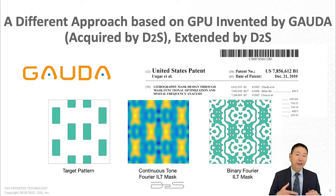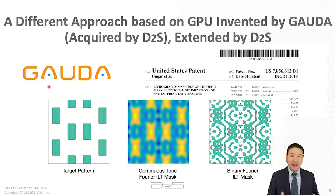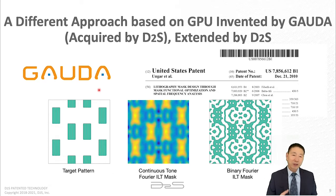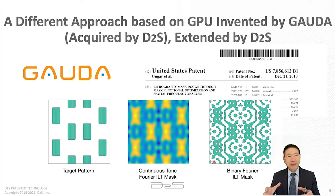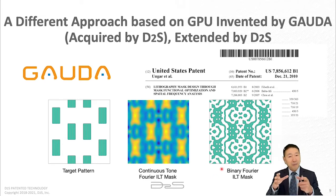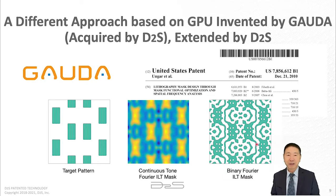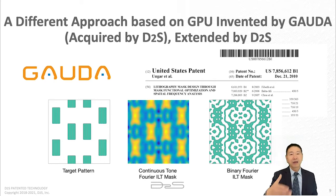The third approach was invented by Gauda. They started as a GPU-accelerated OPC startup, then came up with their own method to solve the inverse problem. What's unique is not only is it GPU-accelerated, but they solve the problem in the frequency domain. Because scanner optics is band-limited, solving the inverse problem in frequency domain is band-limited, offering benefits in terms of symmetry and MRC. Gauda was acquired by D2S, so the D2S approach is based on Gauda's patent.